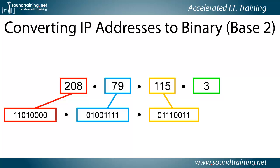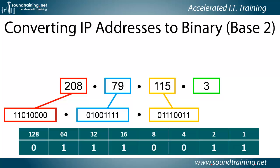Now let's take a look at 115. In this case the 64-bit, 32-bit, 16-bit, 2-bit, and 1-bit are turned on. 1 plus 2 equals 3, plus 16 equals 19, plus 32 equals 51, plus 64 equals 115.